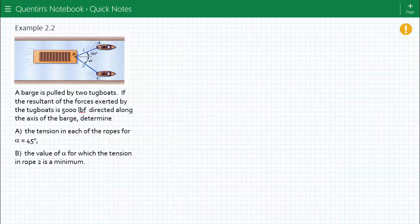Okay, let's look at example 2.2. In example 2.2 we have a barge being pulled by two boats. If the resultant of the forces exerted by the boats is 5,000 pounds force directed along the axis of the barge,